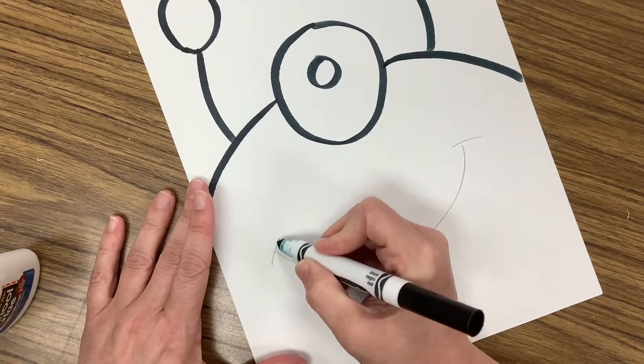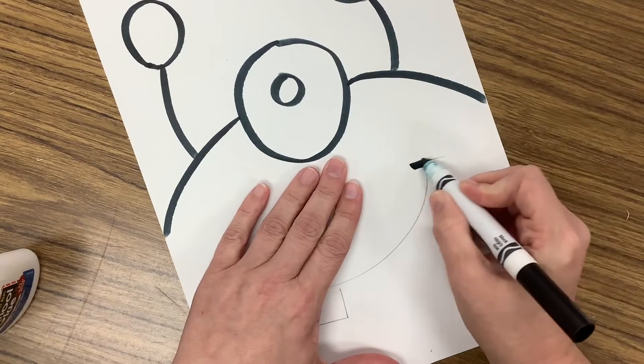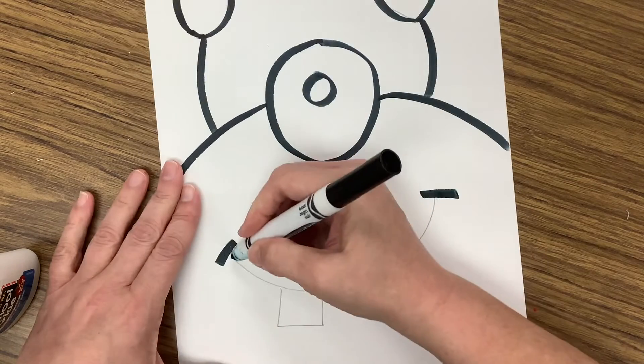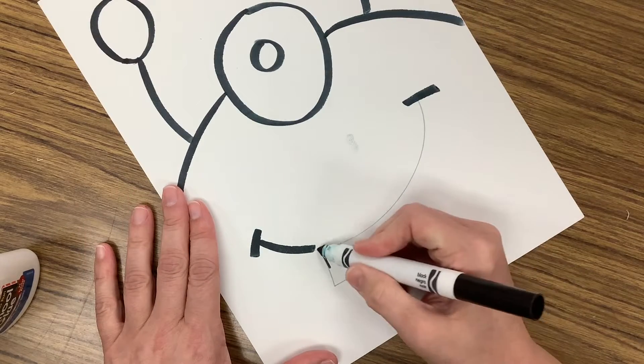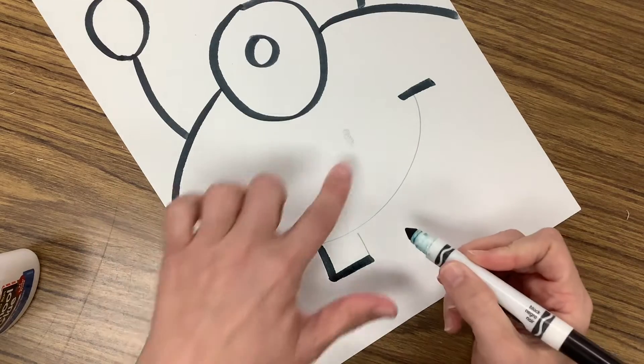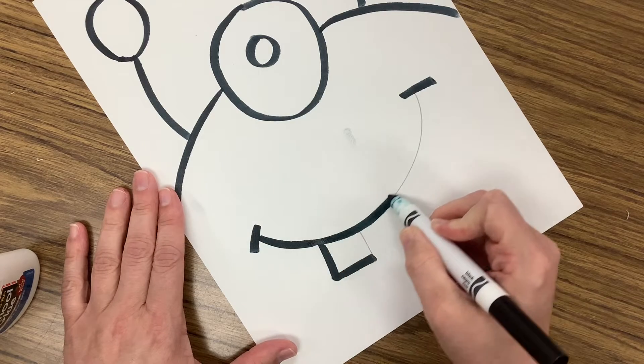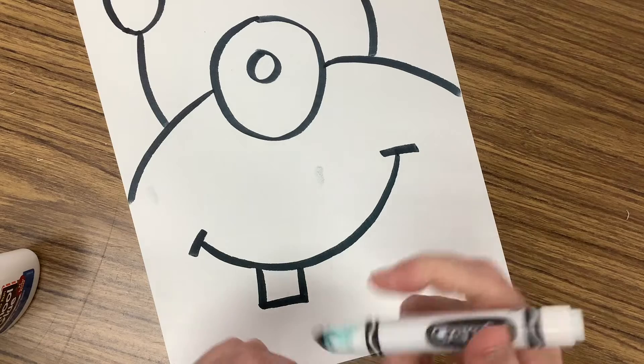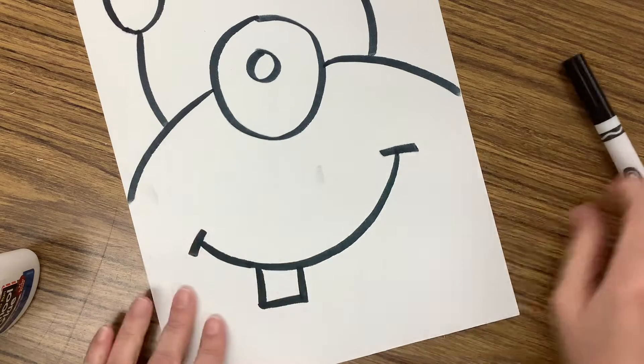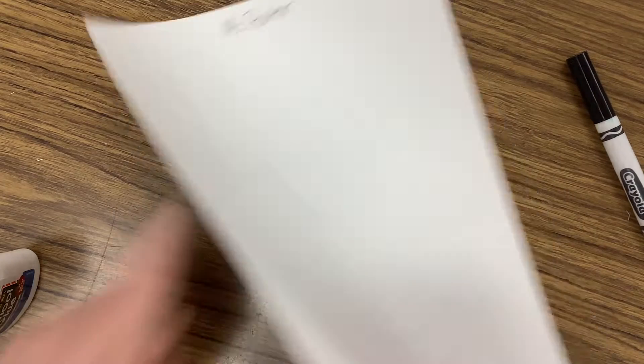Notice I'm using kind of the thick edge or the thick side of my marker, the flat part, to get a nice wide line instead of doing a real thin line like that. All right, don't worry if the marker smears a little bit. When we get to the coloring part, you're not going to notice that at all.